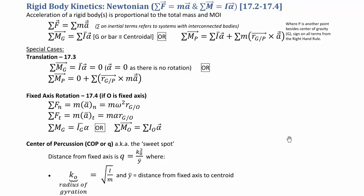We also briefly looked at the center of percussion — essentially the sweet spot of a bat, tennis racket, or similar object. The distance to point Q, measured from the fixed axis, equals the square of the radius of gyration divided by y-bar, where y-bar is the distance from the fixed axis to the centroid. The radius of gyration is the square root of I over m, as long as I and k are about the same point.